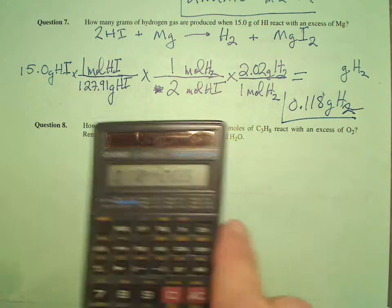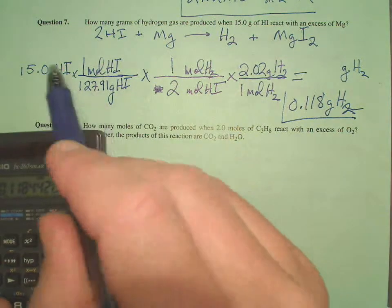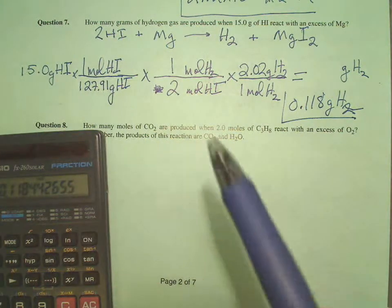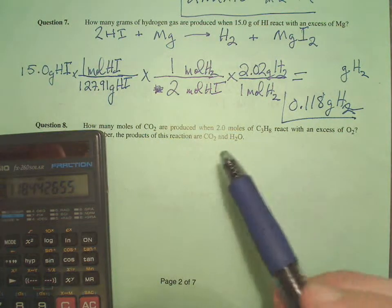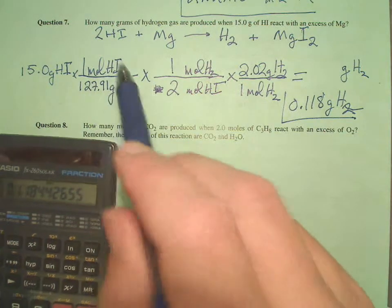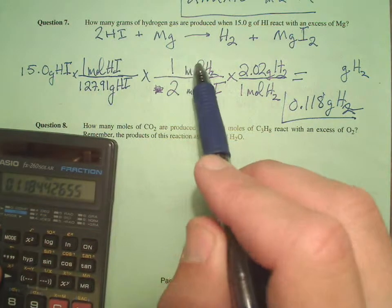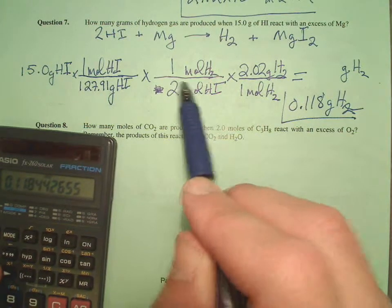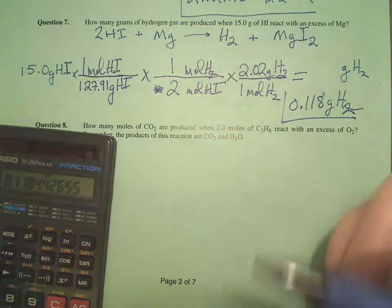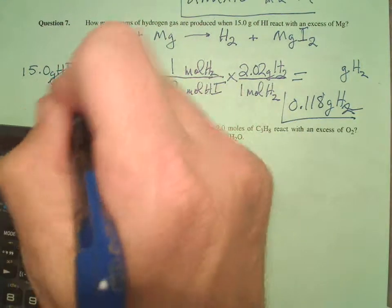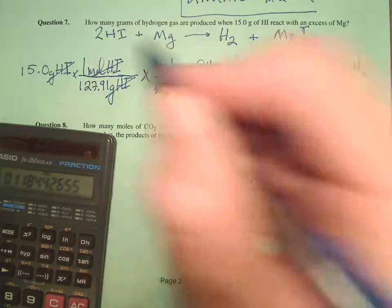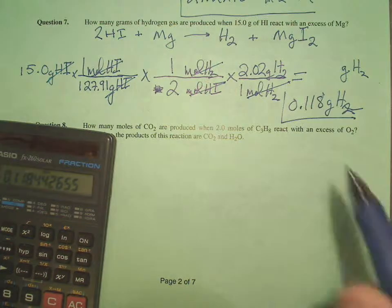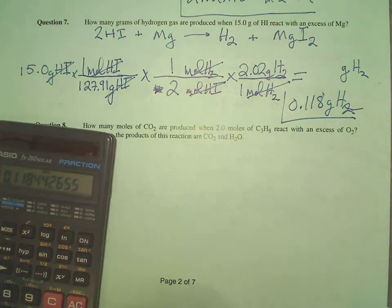Real quick review: got it into moles — just like we said, get whatever units you start with into moles. Then we took our mole-to-mole ratio, and then we moved it out into the units that we need. Double-check our units: grams of HI cancel with grams of HI, moles of HI cancel with moles of HI, moles of H₂ cancel with moles of H₂, leaving grams. We're good to go.